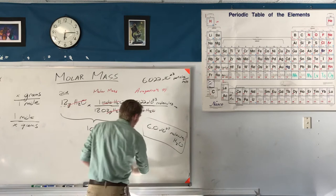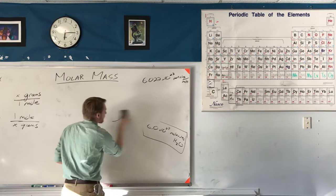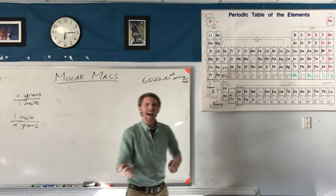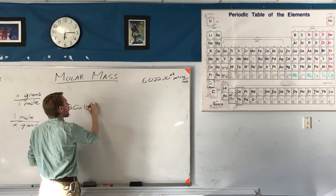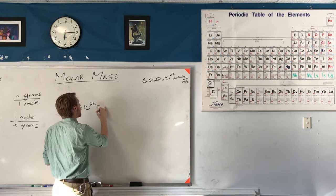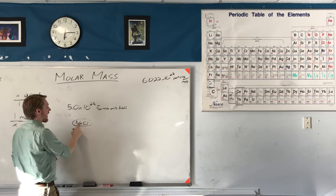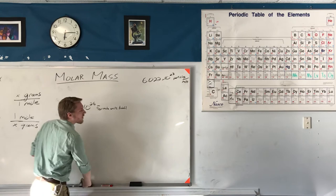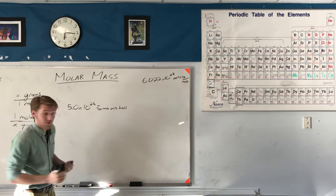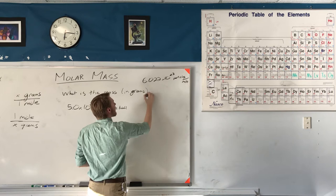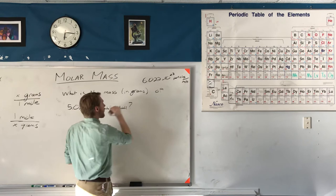Let's do a different example going the other way, using salt — sodium chloride. Let's say I have 5.0 times 10 to the 26th formula units of NaCl. A formula unit is like a molecule for ionic compounds. I want to know what is the mass in grams of 5.0 times 10 to the 26th formula units of sodium chloride. This will take two steps: first get to moles, then convert to grams.